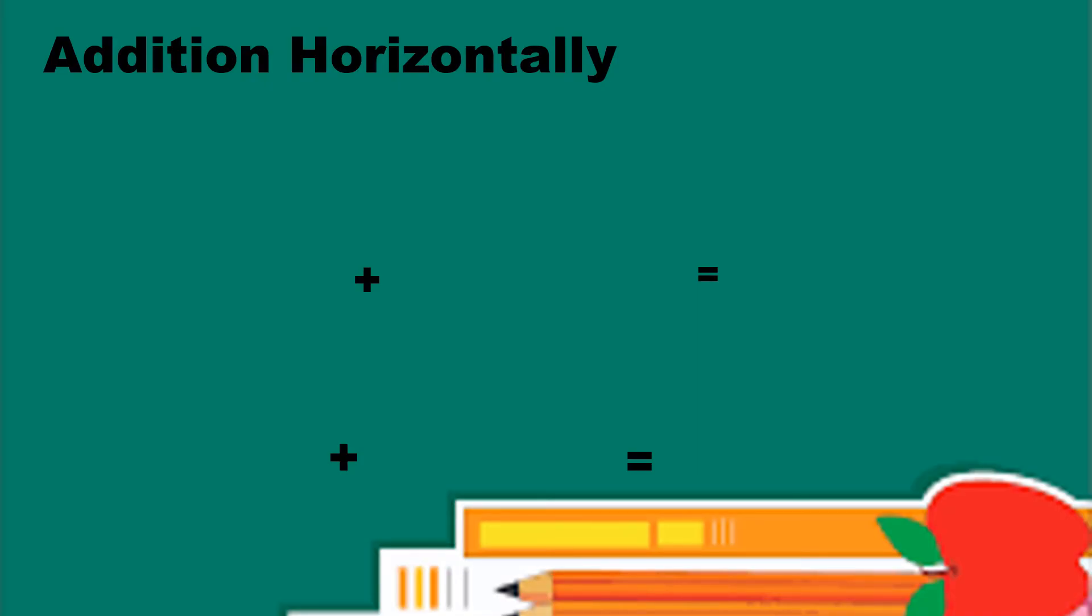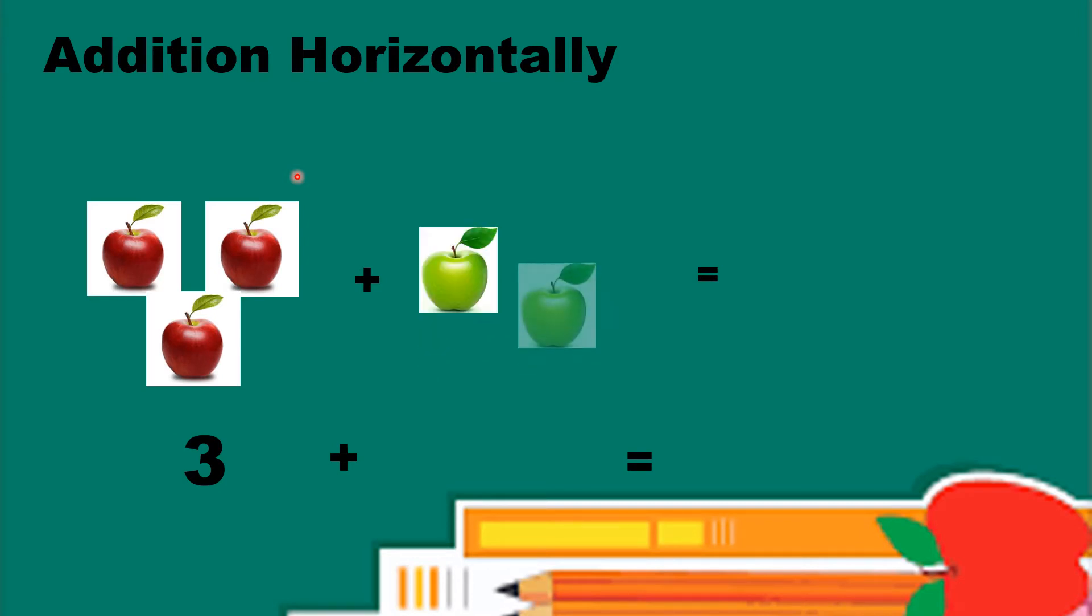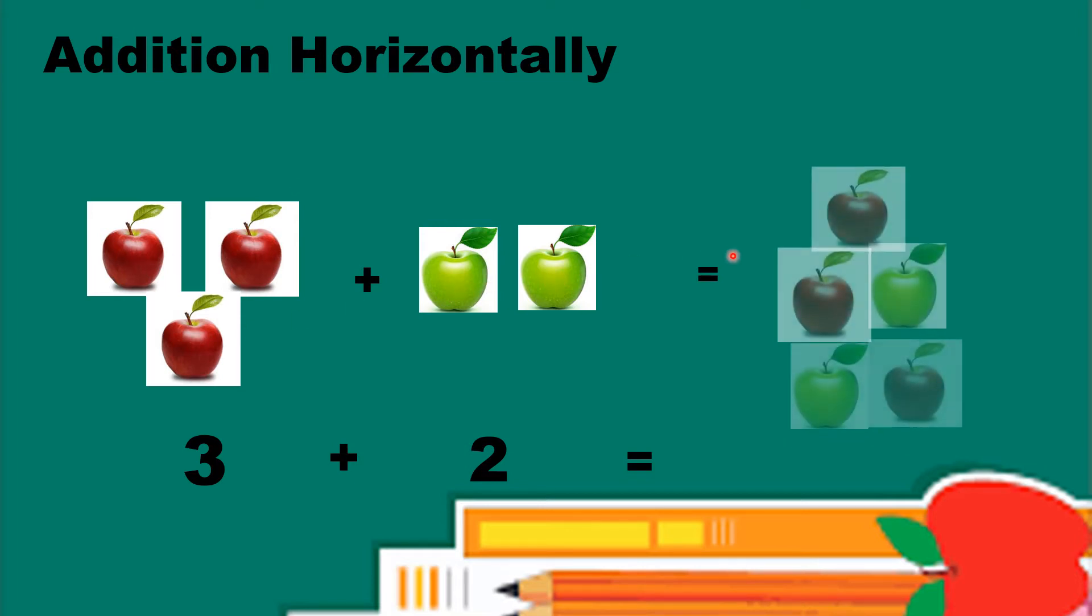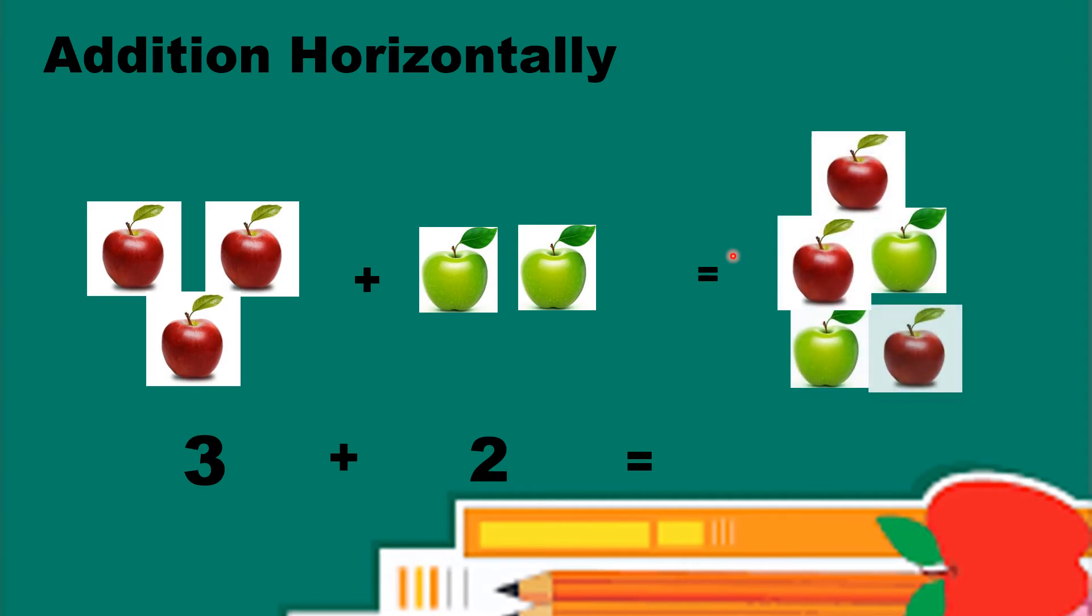Addition horizontally. Horizontally means add the number one after the other number. You can see there are 3 apples in red color, so write number 3. Now, you can see there are 2 apples in green color, so write number 2. How many total apples are there? Start counting with me: 1, 2, 3, 4, 5. So, total number of apples are 5. And read question in this way: 3 plus 2 is equal to 5.